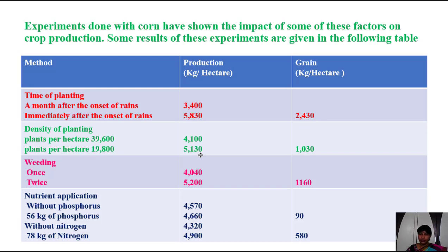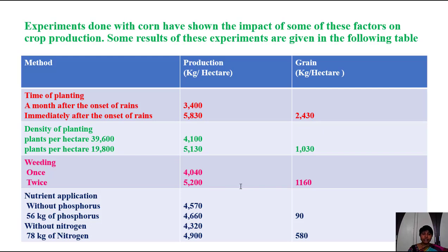We must keep in mind the spacing between two plants — we should not crowd them. For weeding: farmers who removed weeds once got 4,040 kg per hectare, while those who weeded twice got 5,200 kg per hectare — a difference of 1,160 kg per hectare. So removing weeds twice gives more production.